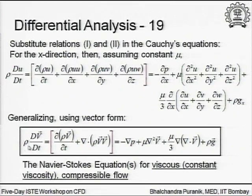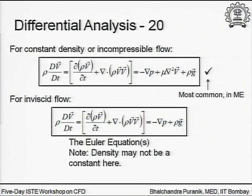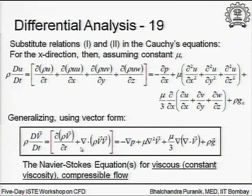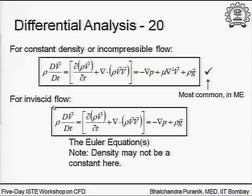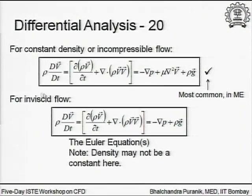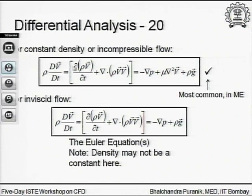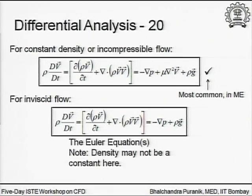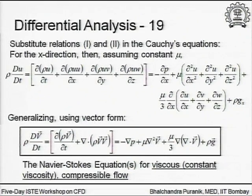What is written in the box is the Navier-Stokes equation for a viscous, constant-viscosity compressible flow. This algebra should be done at least once to be absolutely sure of how it comes about. In the vector form, it includes an additional term: mu/3 times the gradient of the divergence of V, which appears because of compressibility.